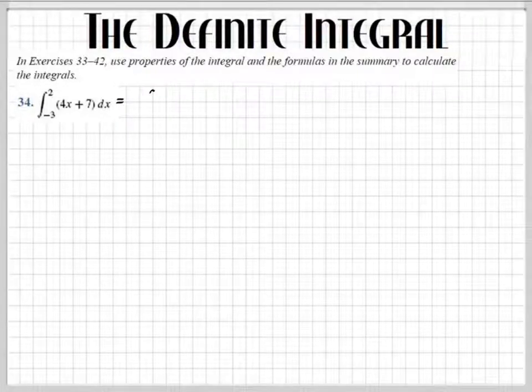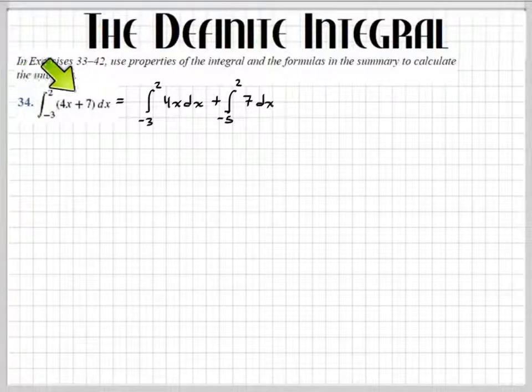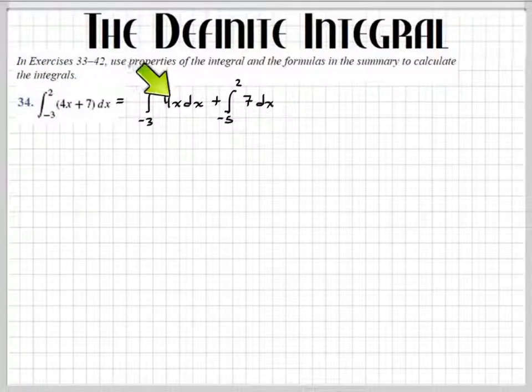So I'm going to break this up. We're going to have negative 3 to 2 of 4x dx plus, and some of you guys will use shortcuts after you understand this. I just need to go slowly to make sure you guys all get it, plus 7 dx. I just broke it up because of the laws of linearity. And I can take that 4 out right there. So we take the 4 out. I can factor him out.